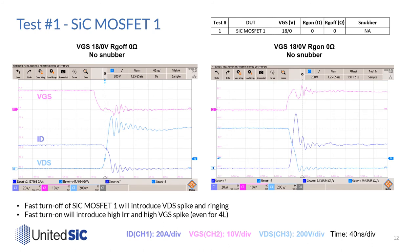Now let's see the waveforms. In test 1, we use 0 ohm to switch the device as fast as possible. The turn-off waveform shows a peak VDS spike over 1000V with ringing duration over 100 nanoseconds. On the turn-on side, the fast switching dI/dt also introduced 112A reverse recovery current and a high VGS spike, even though it is a 4th generation device.